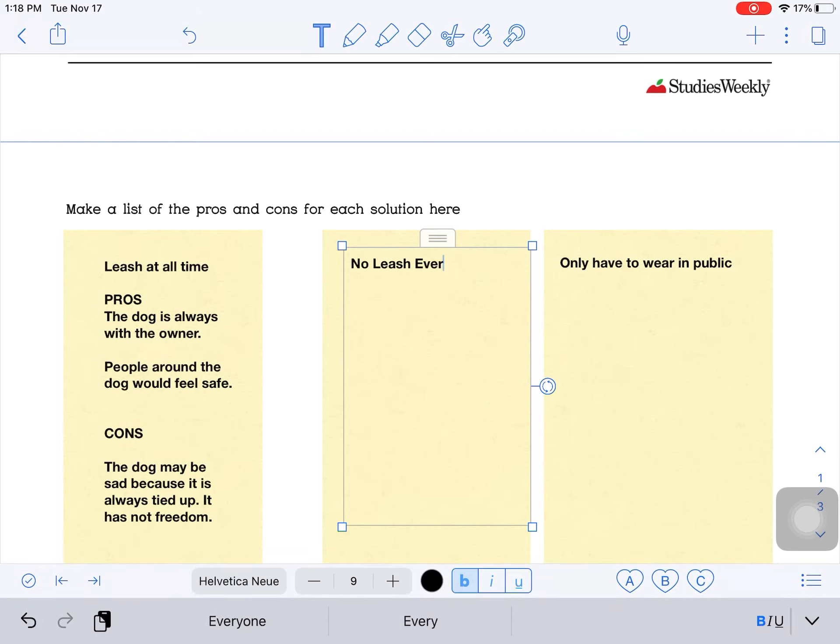All right, so those are my pros and cons here. I'm going to look at no leash ever. So dogs never have to wear a leash. Pro, they would be happy to run free and have fun all the time. What about a con? So something that could be bad about this. Yeah, they could get hit by a car. They could hurt or bite someone. I know that's scary to think about, but that could happen. So no leash ever, they could be happy and they could run free all the time. They could get hit by a car or they could hurt or bite. Oops, I need to add someone.